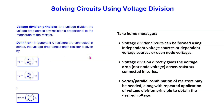In this video, we have explored the application of the voltage division principle. We have seen that voltage divider circuits can be formed using independent voltage sources, dependent voltage sources, or even node voltages. Voltage division directly gives the voltage drop across resistors connected in series, and this may or may not be the same as the node voltage. Finally, with experience, the voltage division principle can be applied repeatedly along with series-parallel combination of resistors to obtain the desired voltage directly without the need for detailed circuit analysis. Thank you for watching this video, and I hope that it is helpful to your learning.